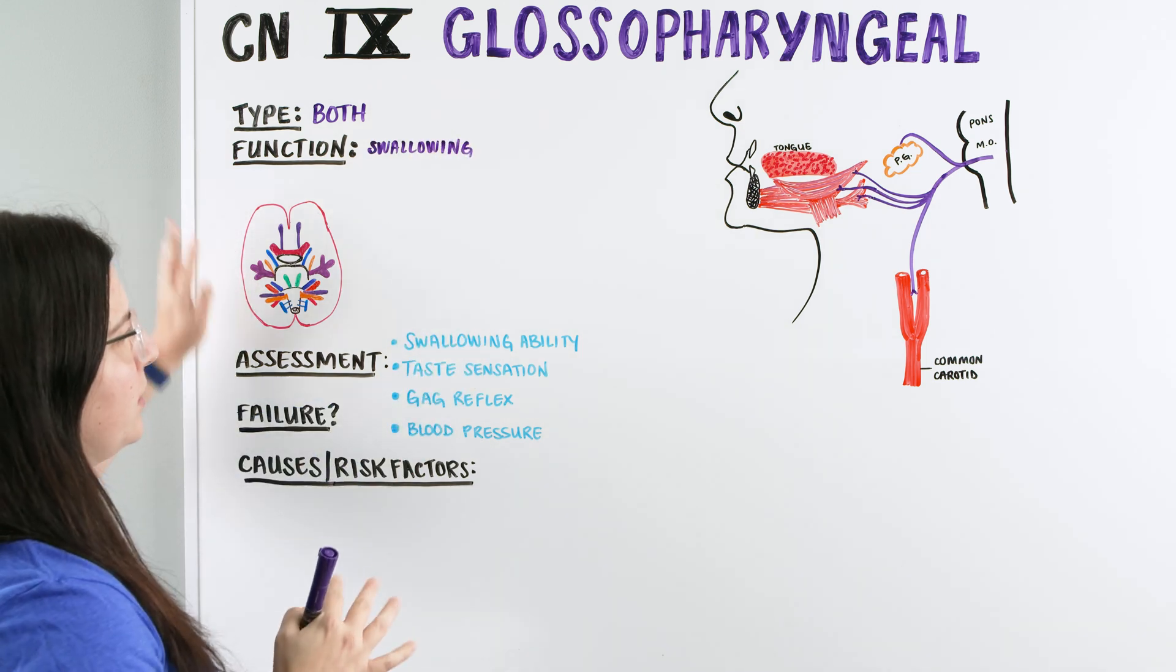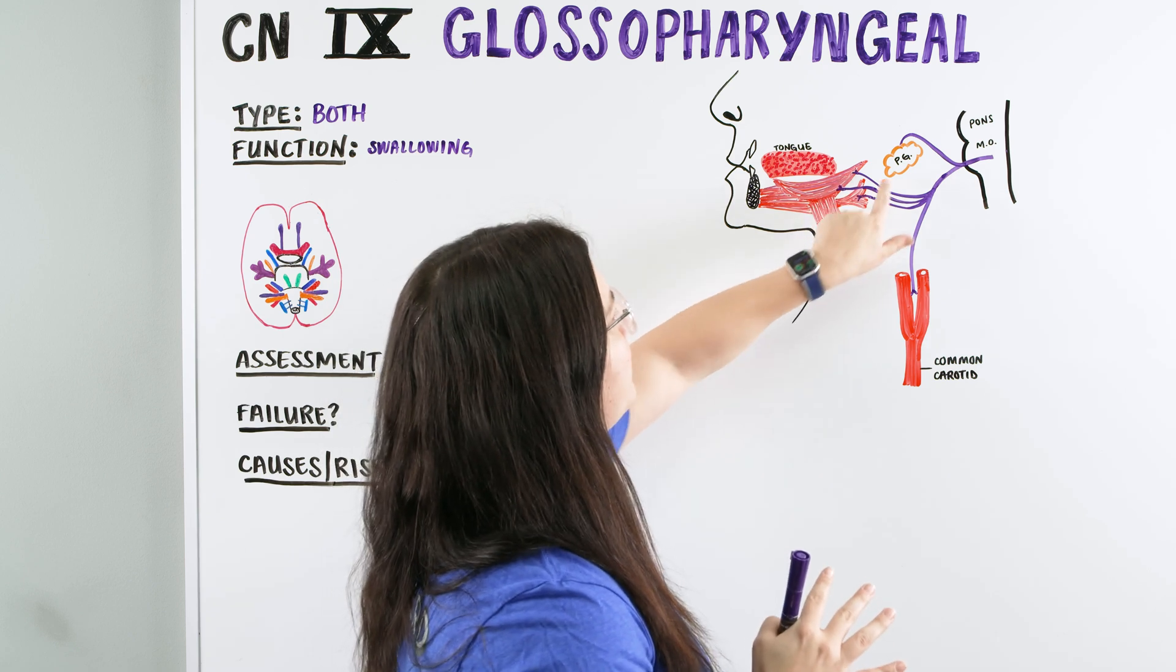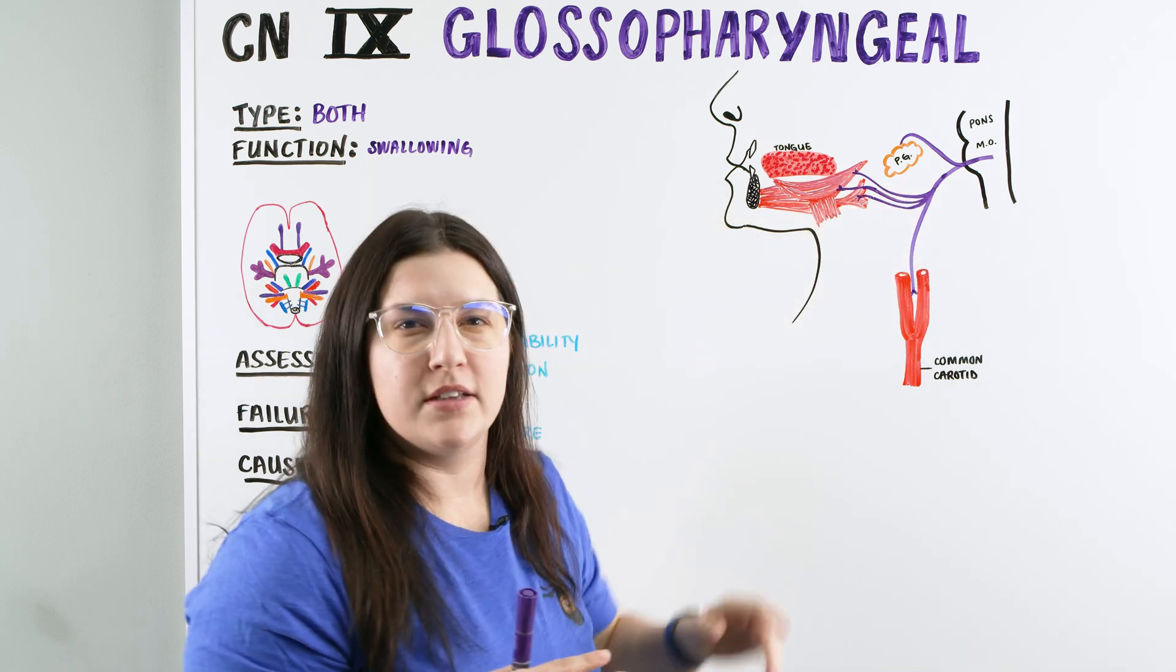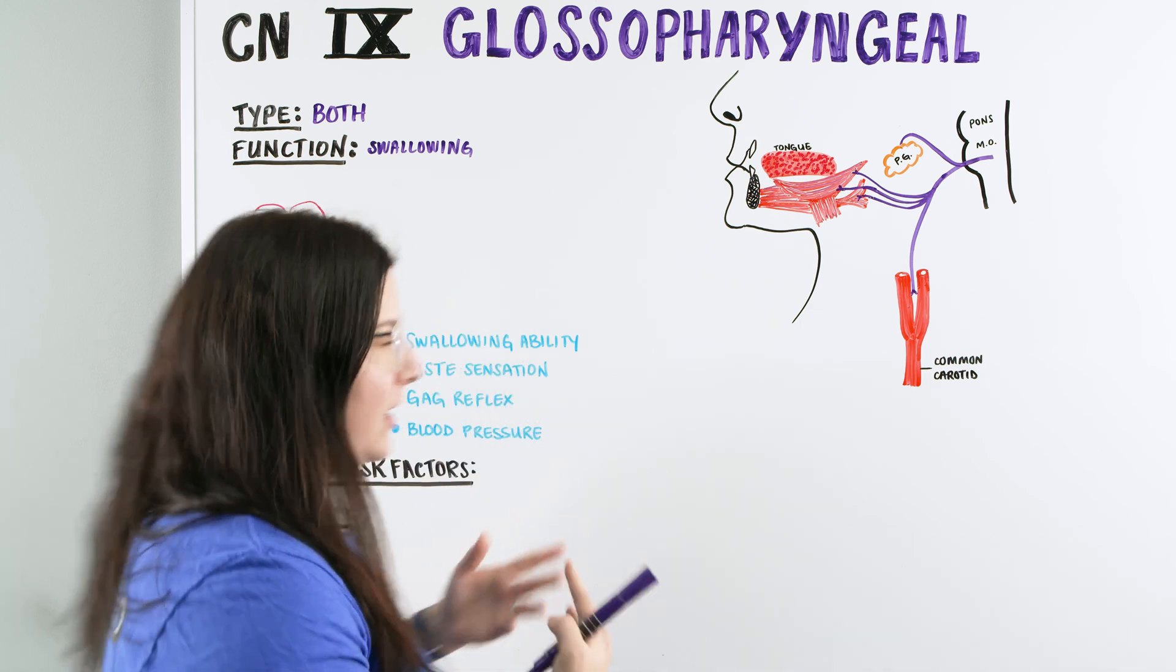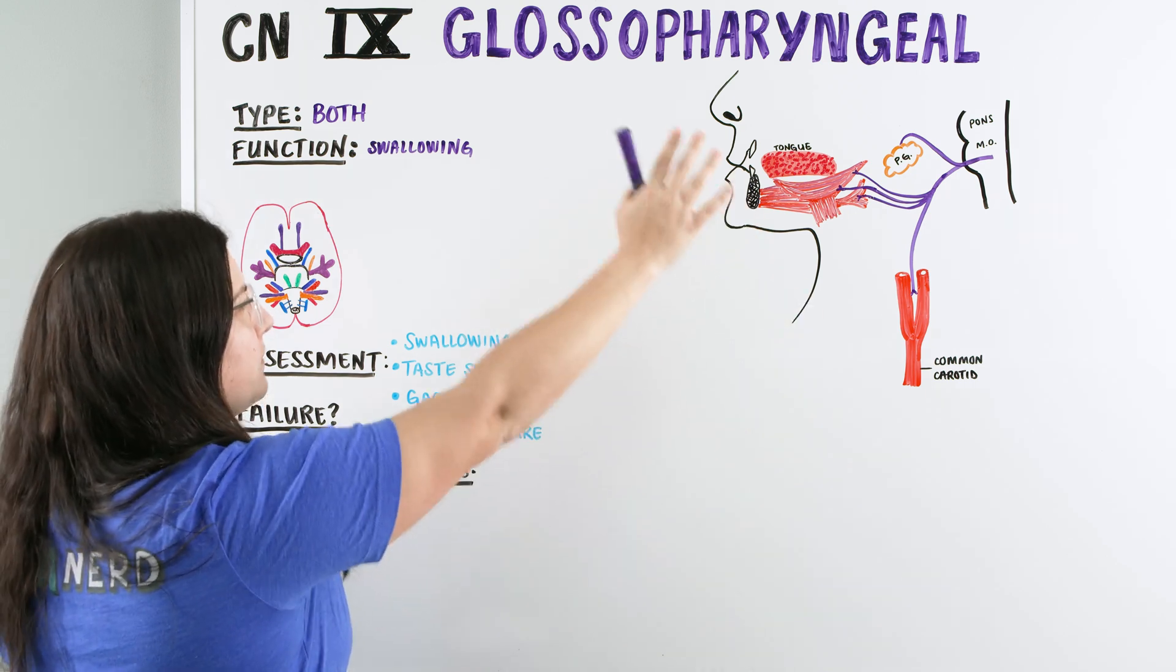The next function that we're going to look at here is the tongue. We have the ability to swallow, but we also have the parotid gland here. And with the parotid gland, we're looking at the function of salivation or saliva. So not only do we have the ability to swallow, but we also have the ability of salivation.